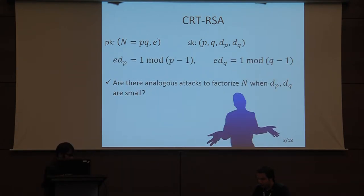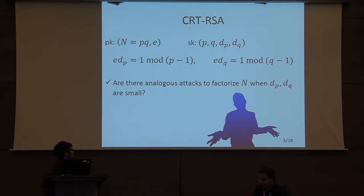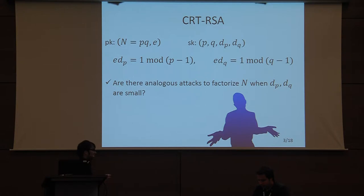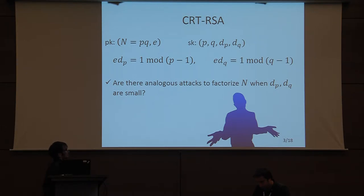Next, we want to recall CRT-RSA, which is the main attack target of this paper. As opposed to standard RSA, in the secret key there is no secret exponent D. Instead there are CRT exponents dp and dq, which satisfy the corresponding CRT equations.